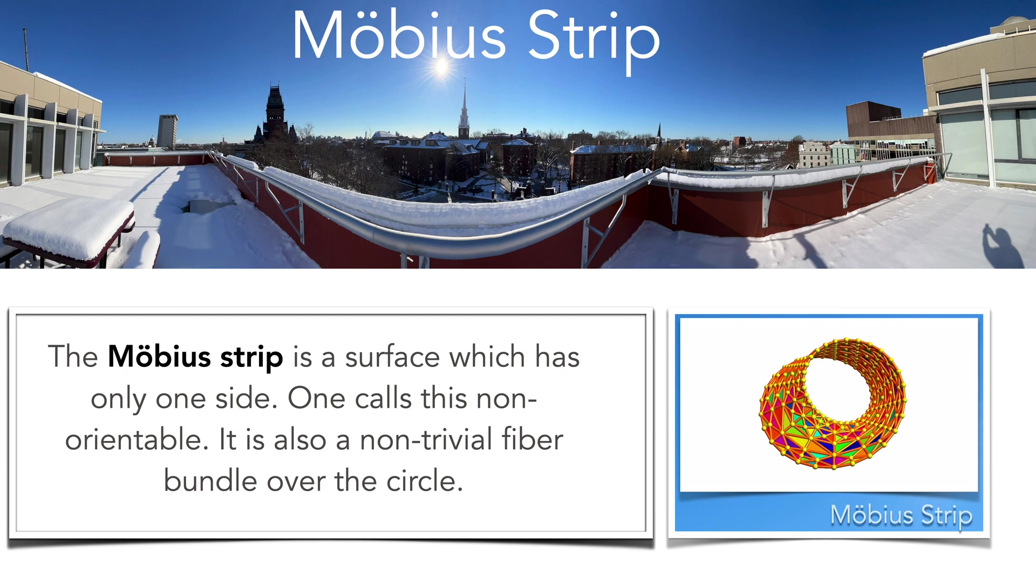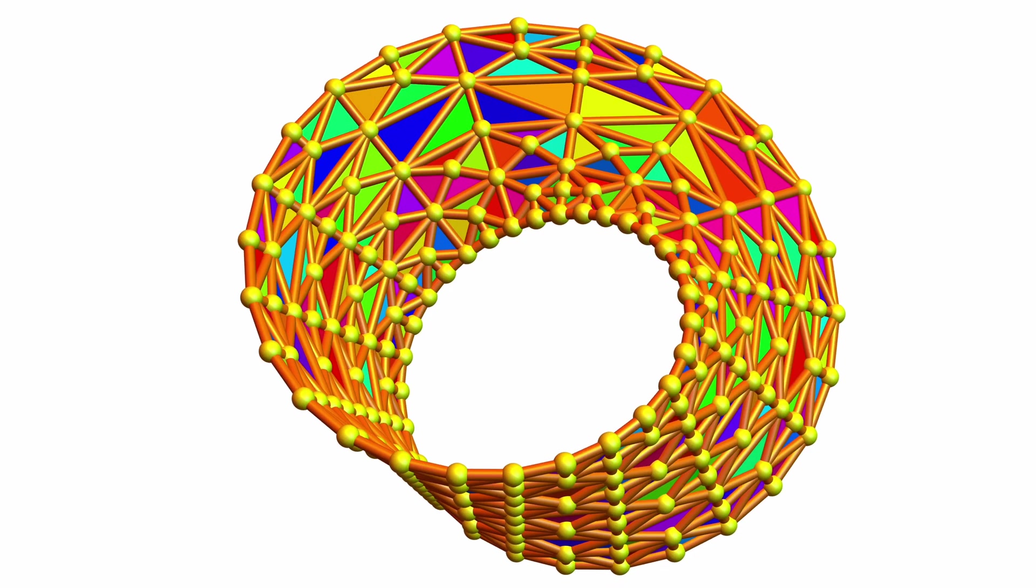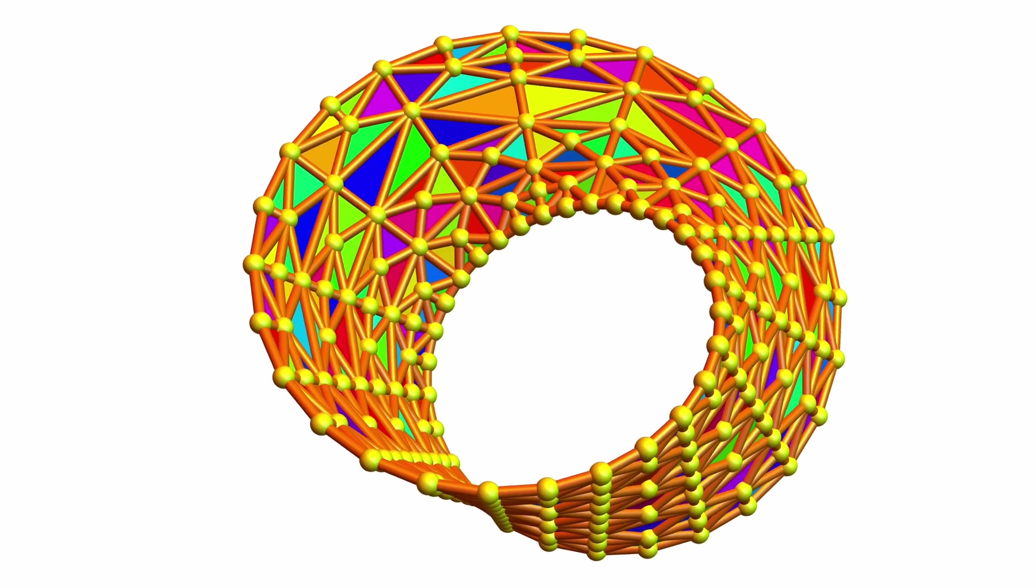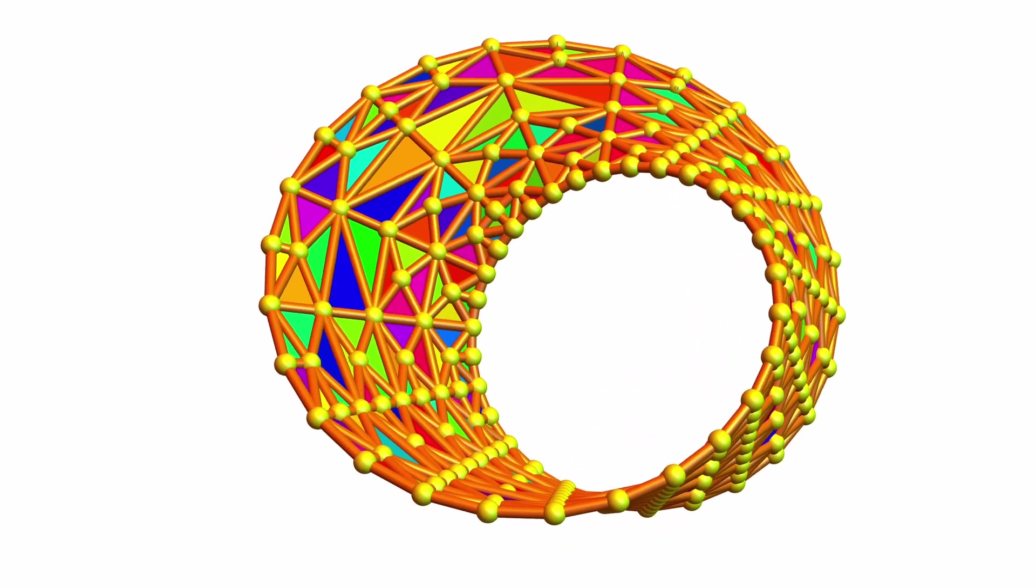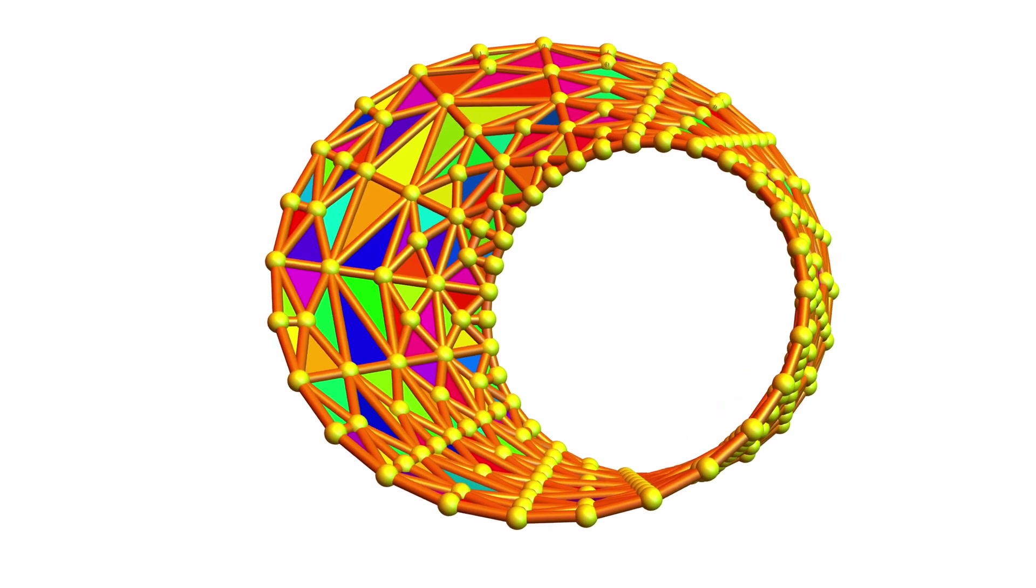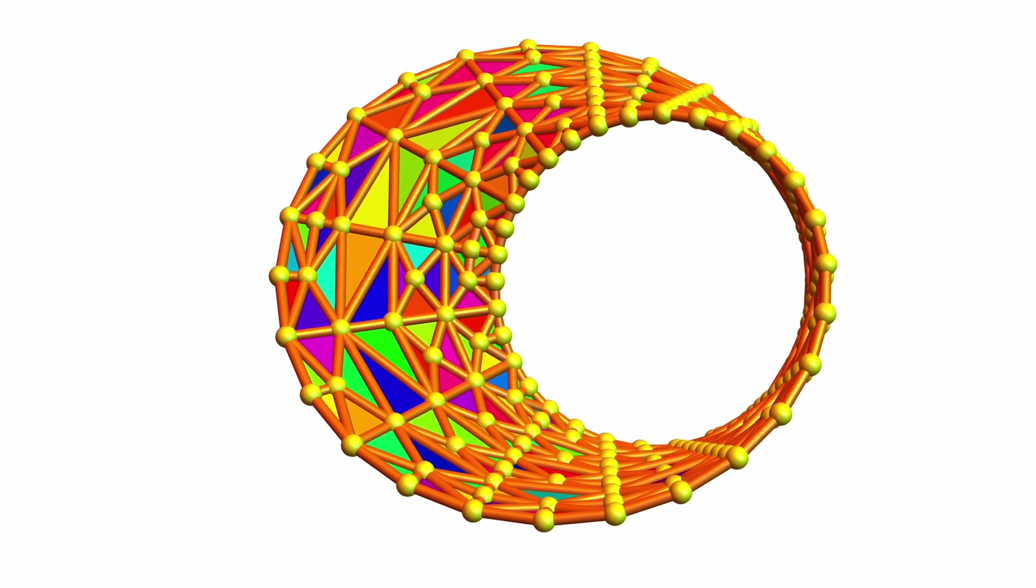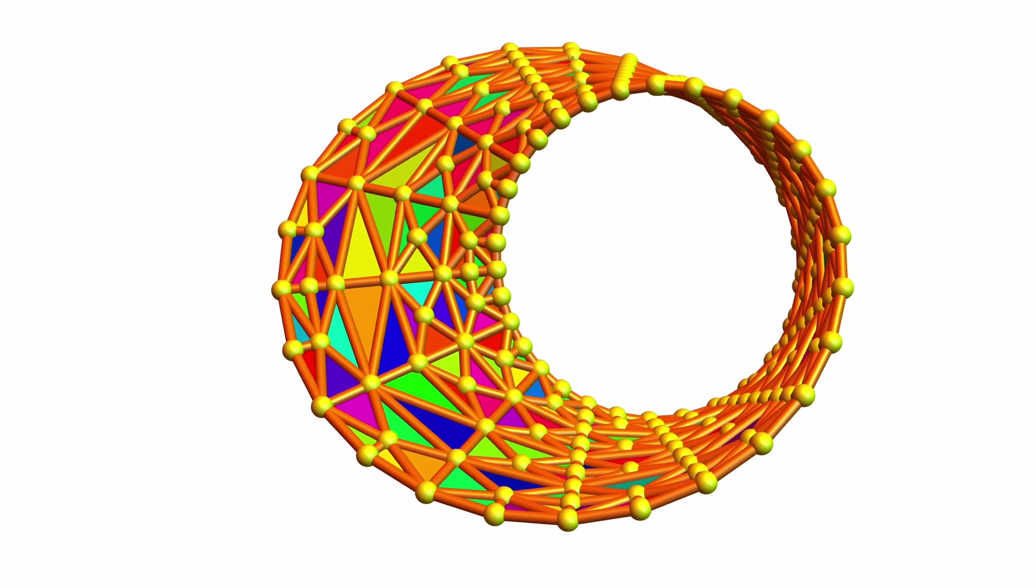The Möbius strip is a famous object which appeared already in Roman art. So here's the picture done in Mathematica and turned around. The triangulation is actually the triangulation which the software uses when making the graphics at a certain level. Usually one does not want to see such discrete structures.